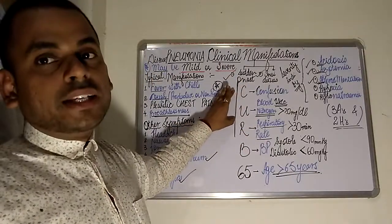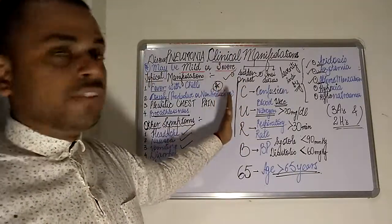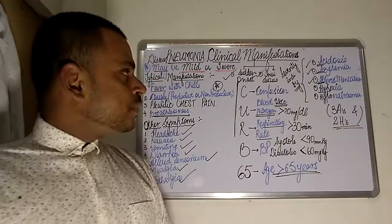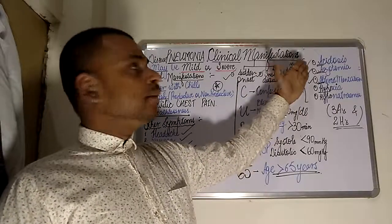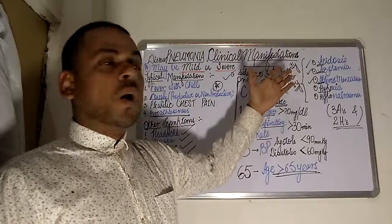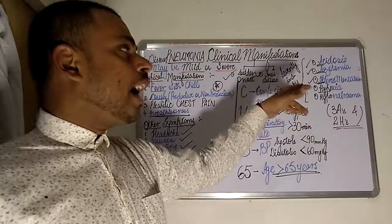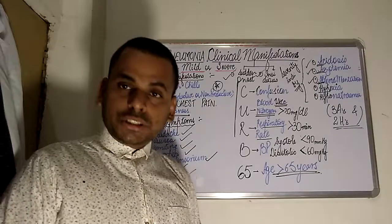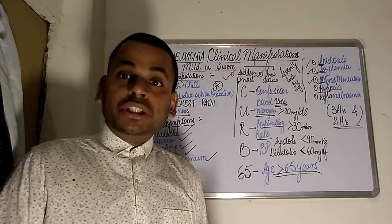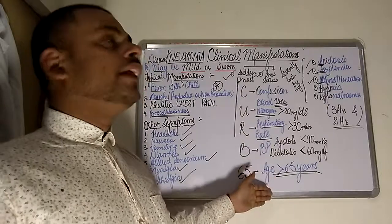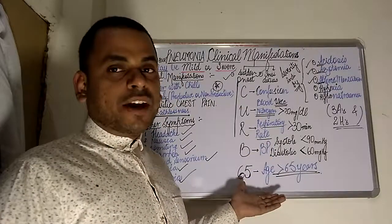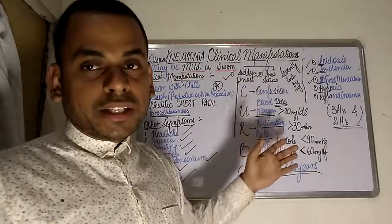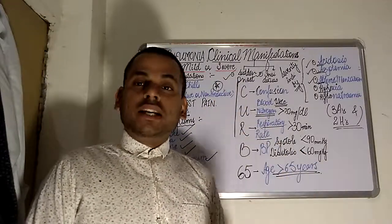If any two of these CURB-65 criteria are fulfilled in a particular patient, the patient needs to be hospitalized. To summarize: severity is indicated by acidosis, azotemia, altered mentation, hypoxia, and hyponatremia. Whether to hospitalize is determined by the CURB-65 criteria.